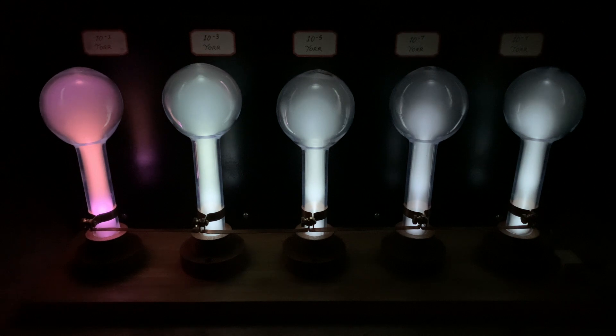Working our way further down the line, we start to see that this bluish color starts to become more inherent and more defined, as in the case of the 10 to the minus 5 torr lamp, where the bulb is almost certainly a sky blue color.